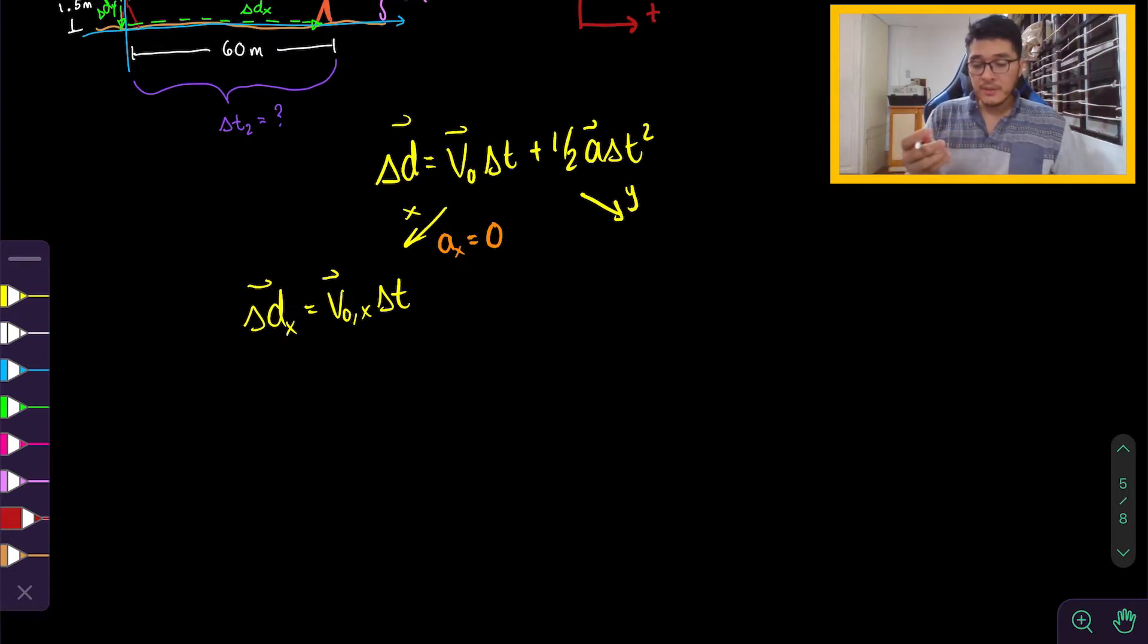We can simplify further by considering directions, because right now is a vector quantity. We want to now indicate the directions by assuming to the right is positive and up is positive. So using this convention, our horizontal displacement, which is to the right, is going to be positive 60. Our initial velocity is 55 meters per second pointing to the right, so we take it to be positive as well. And we call delta t2 the horizontal time that it took to travel 60 meters.